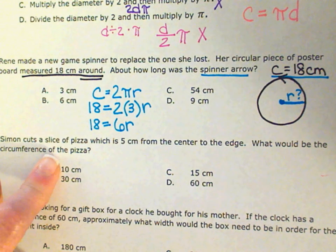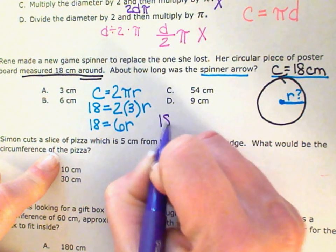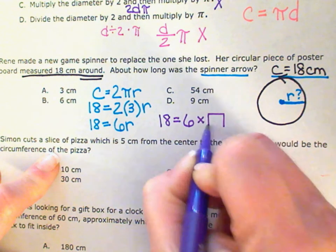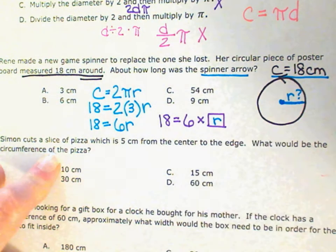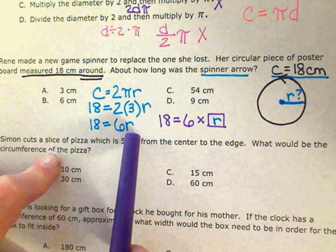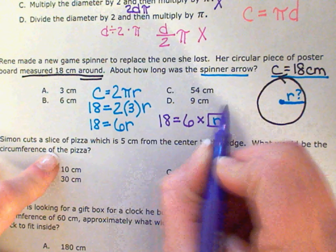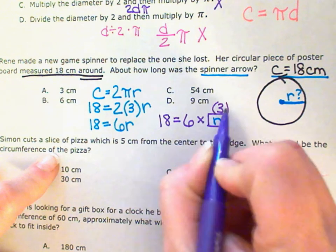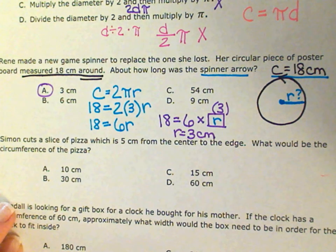Now I have an equation: 18 equals 2 times 3, which is 6, times R — so 18 equals 6R. This is like missing-number problems from 4th and 5th grade, just with a letter instead of a box. What times 6 gives me 18? I can say 18 divided by 6 gives me R, or simply: 6 times 3 equals 18. So my radius is 3 centimeters. The answer is A.